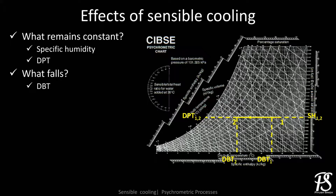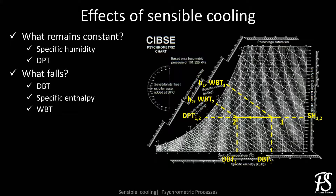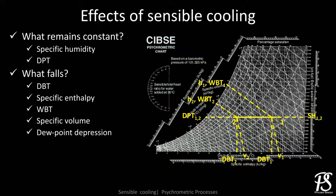The psychrometric properties that see a decrease in their value are: number one, dry bulb temperature — due to the removal of heat by the cooling coil, the temperature of air drops. Next is specific enthalpy — with the removal of heat by the cooling coil, the specific enthalpy of air drops. Wet bulb temperature also sees a drop in its value. The specific volume also decreases as the air becomes cooler. Since dew point temperature remains constant but dry bulb temperature drops, dew point depression also decreases. As the air moves closer to the saturation line, its moisture carrying capacity decreases, so we also observe a drop in wet bulb depression.